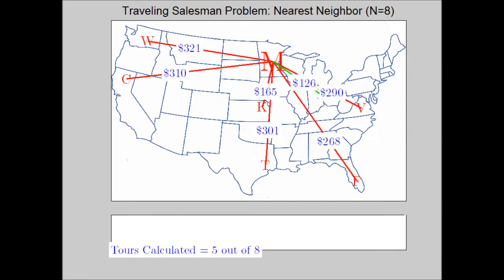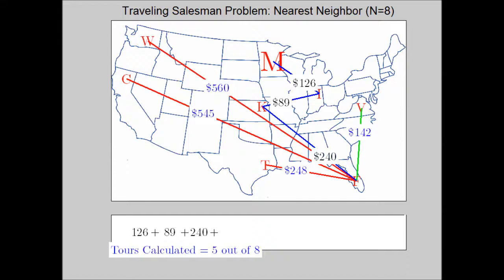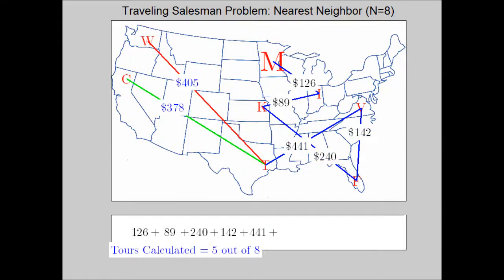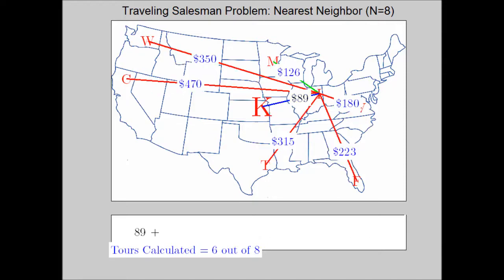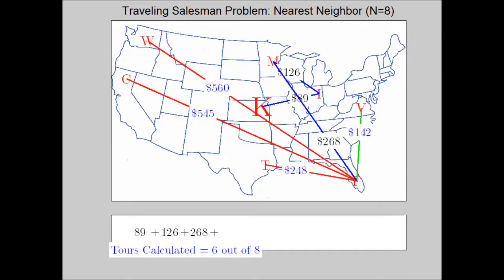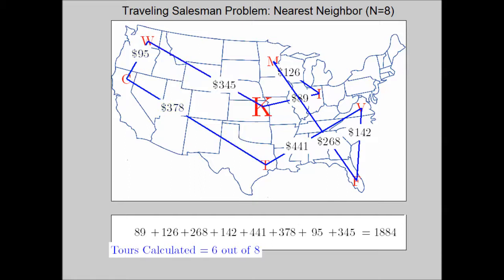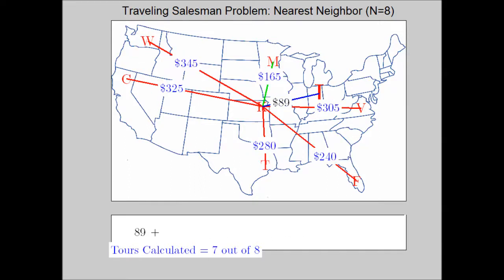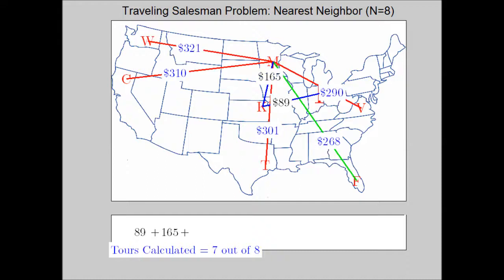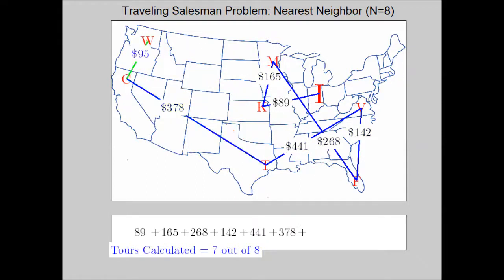This is an efficient algorithm because we can run it eight times — since there are eight cities — in a relatively simple manner. It's not terribly complicated, as opposed to the brute force algorithm which would require tens of millions of different tours to calculate. The nearest neighbor algorithm is very efficient.